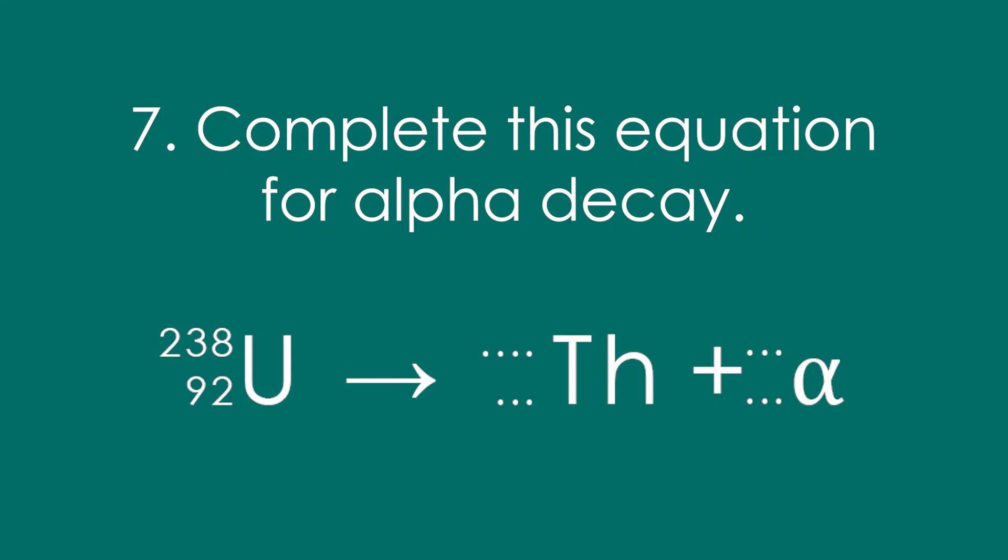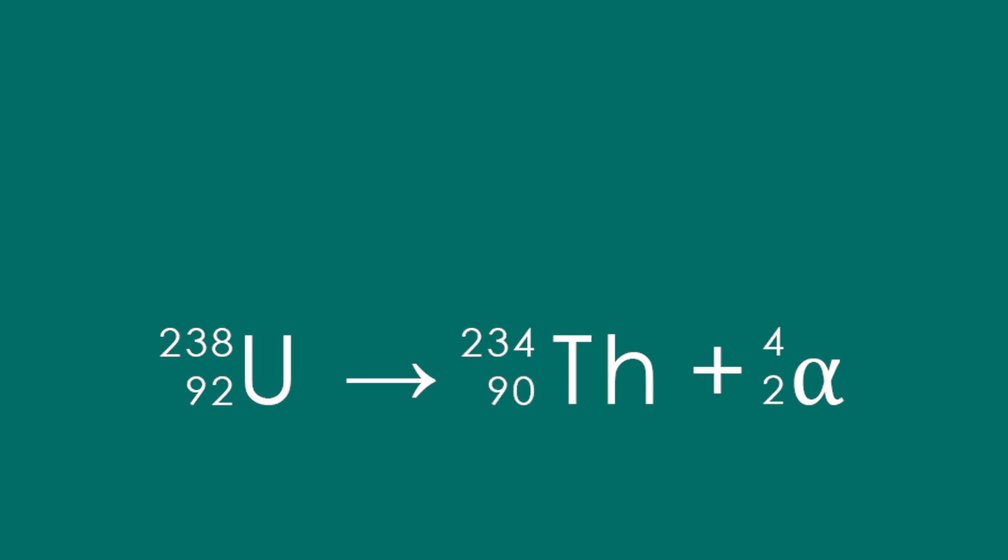7. Complete this equation for alpha decay. So we know that alpha is four and two, so we just take four away from the mass, and two away from the atomic number.